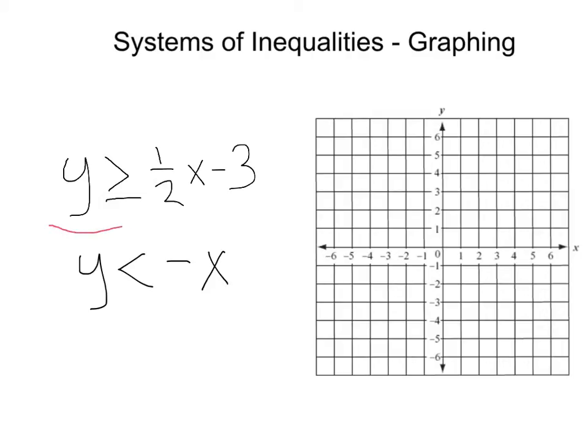Let's start by graphing this inequality: y is greater than or equal to one-half x minus three. First, we've got our y-intercept at negative three. We've got a slope of one-half, that's up one over two.